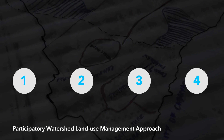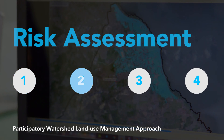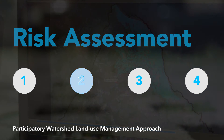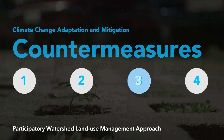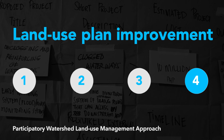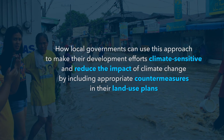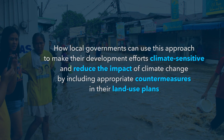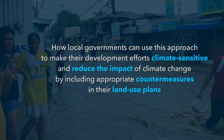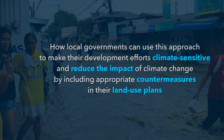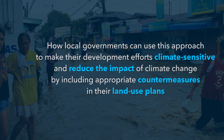The four steps are: 1. Scenario Analysis, 2. Risk Assessment, 3. Climate Change Adaptation and Mitigation Countermeasures, and 4. Land Use Plan Improvement. You will learn how local governments can use this approach to make their development efforts climate sensitive and reduce the impact of climate change by including appropriate countermeasures in their land use plans.